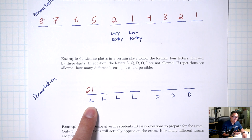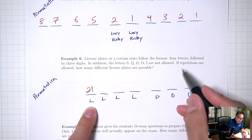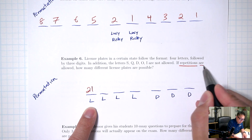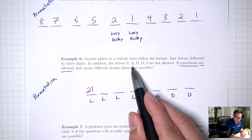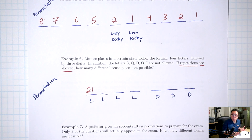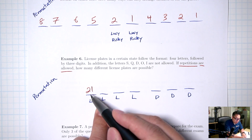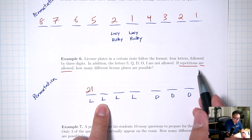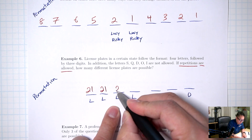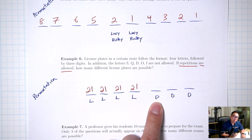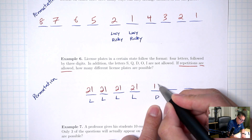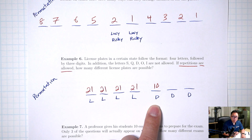Example 5: 10 friends, including Lucy and Ricky, need to arrange themselves in a line for a photo. Lucy and Ricky need to be in the middle with 4 friends on either side. How many ways can they arrange themselves? We're arranging people in a line — if you swap two people, that's a different arrangement. So the order does matter, which means this is a permutation.